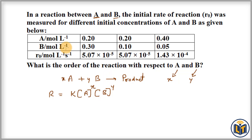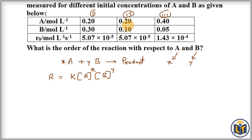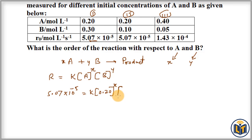Now we can plug in the experimental data into the rate law expression one by one. There are three experimental data sets given. In the first experimental data, the rate of reaction is 5.07 × 10⁻⁵, which is equal to K times [A] = 0.20 raised to power X, times [B] = 0.30 raised to power Y. We label this as the first equation.